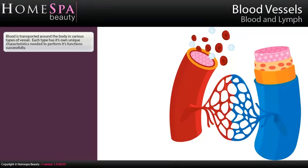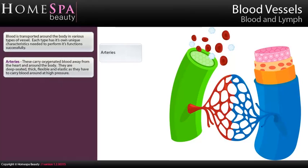Blood vessels. Blood is transported around the body in various types of vessel, each with its own unique characteristics needed to perform its functions successfully. Arteries carry oxygenated blood away from the heart and around the body. They are deep-seated, thick, flexible and elastic as they have to carry blood around at high pressure.